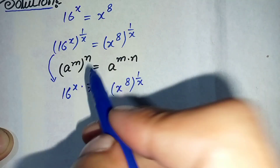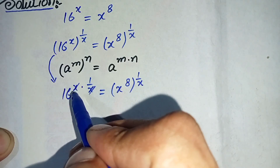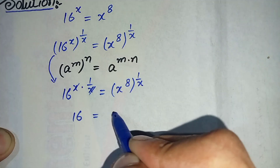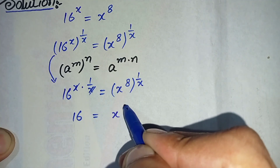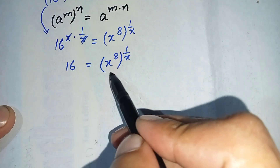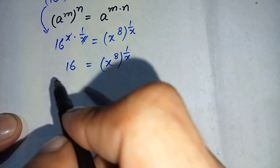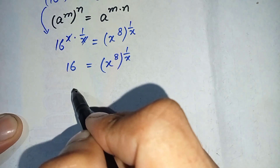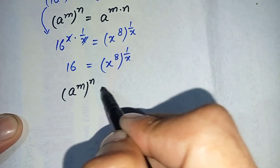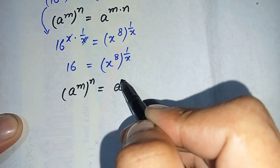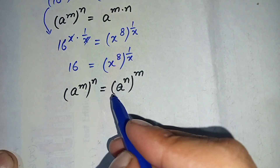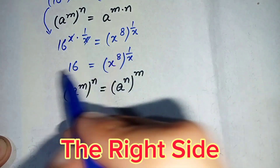By using this formula, the left-hand side becomes 16 raised to power x multiplied by 1 over x. The x and x cancel each other, so only 16 is left. The right-hand side remains x raised to power 8, whole power 1 over x. In the next step, on the right-hand side we will use the exponential formula: a raised to power m, whole raised to power n, can also be written as a raised to power n, whole raised to power m.